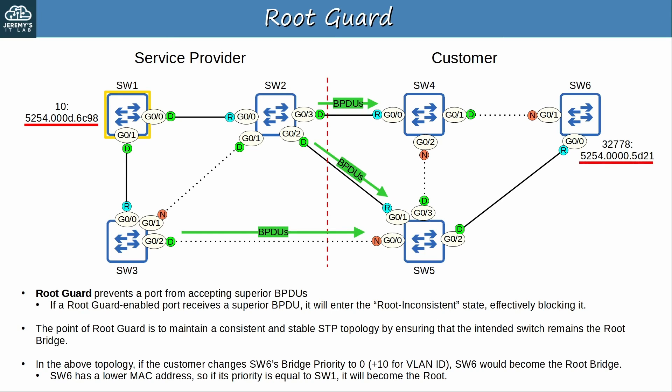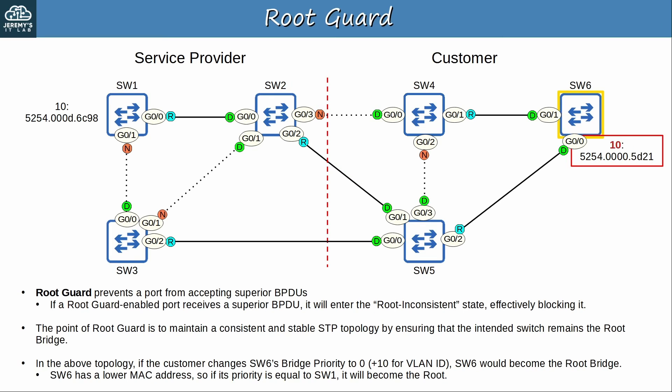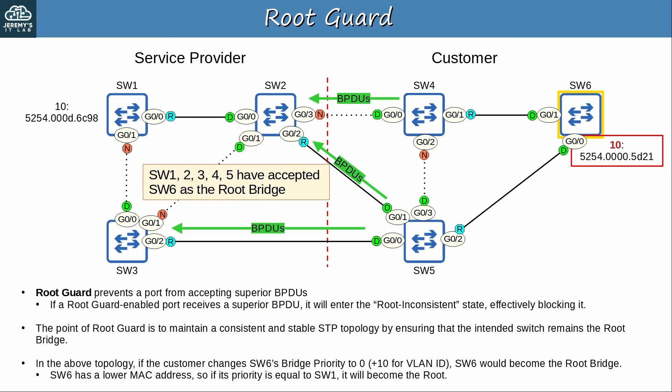That's because SW6 has a lower MAC address. SW6's MAC starts with 5254.0000, and SW1 starts with 5254.000D. So after changing SW6's priority, it declares itself the root bridge. SW4 and SW5 forward SW6's BPDUs toward the service provider network, and in the end SW1, 2, 3, 4, and 5 have all accepted SW6 as the root bridge.